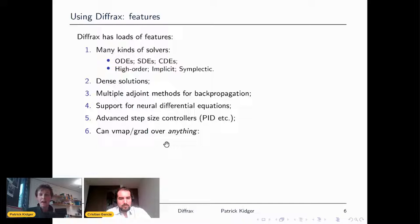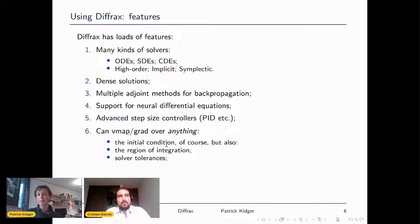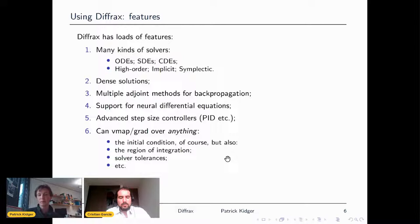You can vmap or grad over anything in Diffrax. In JAX-based differential equation solving libraries, this is really new. It's common to batch over your initial condition or differentiate with respect to it, but it's much less common to differentiate with respect to the region of integration or the tolerances inside your solver. Because Diffrax is built inside JAX's auto-differentiation framework, it allows us to do these things completely for free — something that in any other framework basically just doesn't exist. This is a huge step change with the ubiquitous differentiable programming we're starting to see.